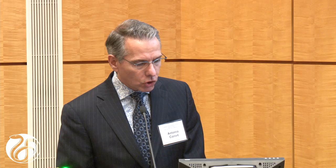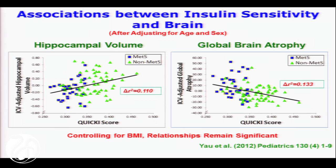These two graphs show the x-axis as the QUICKIE score — the higher the value, the more insulin-sensitive that kid is. On the y-axis is either the intracranial-vault-adjusted volume of the hippocampus, controlling for the intracranial vault size since we have boys and girls, or global atrophy. The higher the insulin sensitivity, the less water there is in that brain. And the more insulin-sensitive the kid is, the bigger the hippocampal size.